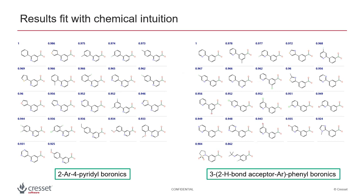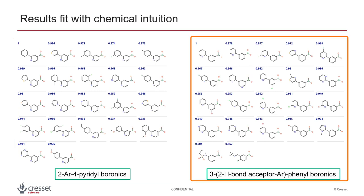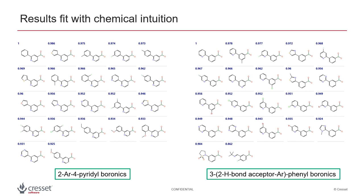Pickr results fit with chemical intuition. Here we have the top two clusters from a Pickr exploration of a boronic acids dataset. We can see the first cluster is made up of four pyridyl boronics substituted at the two position with differently decorated aryl groups. The second cluster comprises phenyl boronics that are substituted at position 3 with aryl groups bearing an H-bond acceptor in the ortho position. Cluster members are sorted in descending order of similarity to the cluster medoid, which has a similarity value of 1.